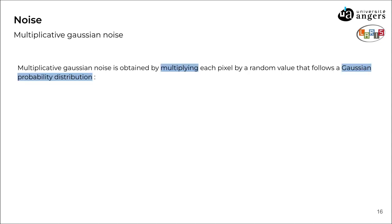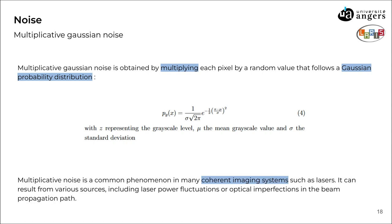In the next part, we are going to use images where we intentionally added noise, and we are going to use three types of noise. The first noise is multiplicative Gaussian noise. It is obtained by multiplying each pixel by a random value that follows a Gaussian probability distribution of this form. Multiplicative noise is a common phenomenon in many coherent imaging systems, such as lasers, and can result from various sources including laser power fluctuations or optical imperfections in the beam propagation path.